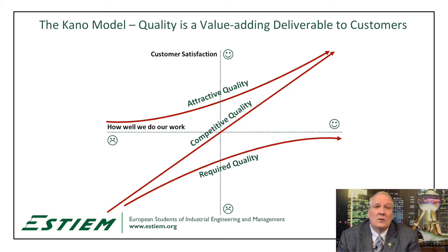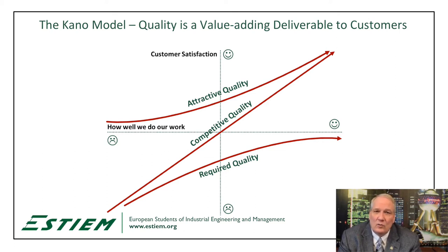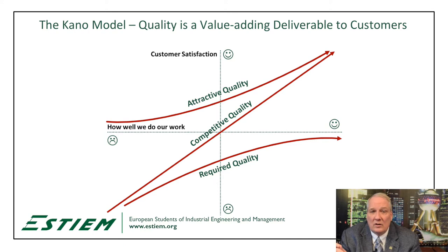The model was created by Dr. Noriaki Kano of Japan. In it, we see a vertical axis for customer satisfaction, and a horizontal axis about the quality or excellence of the design. Both go from low to high. Dr. Kano defined three different functions that describe quality.